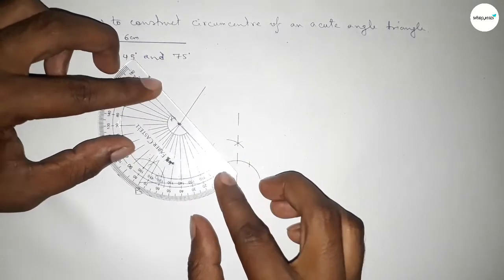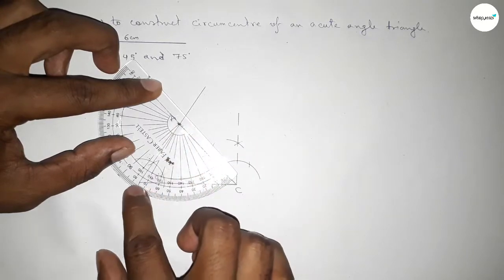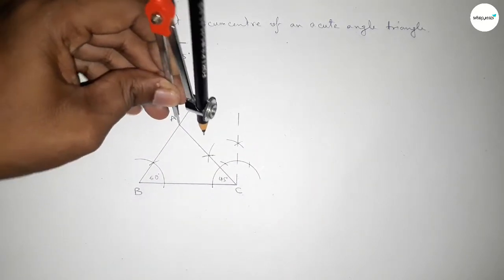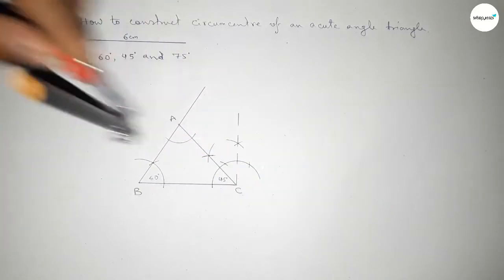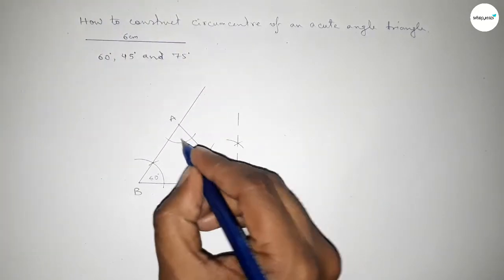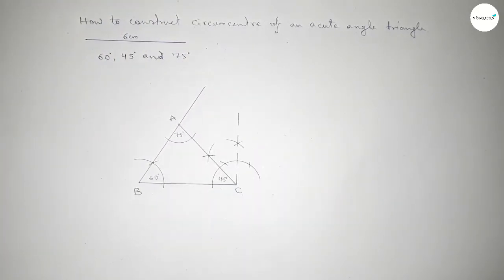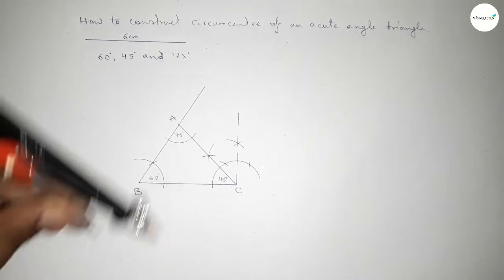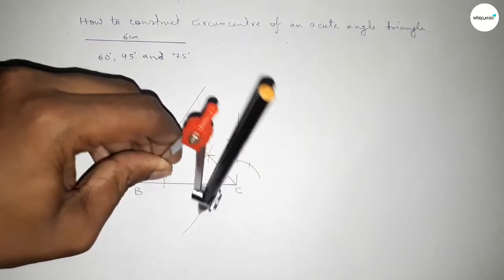Taking here point A. Checking angle A — this is perfectly a 75 degree angle. So we now have the acute angle triangle with angles 60°, 45°, and 75°. Next we have to bisect the line BC first.